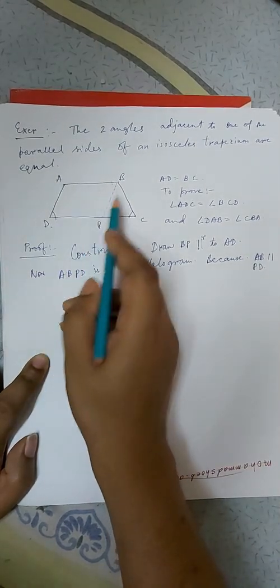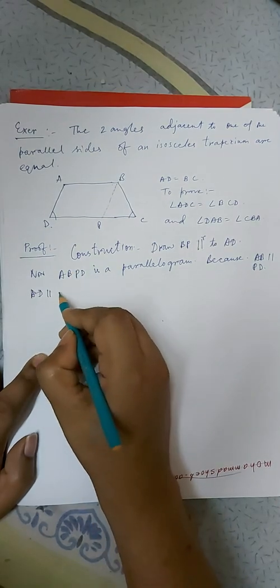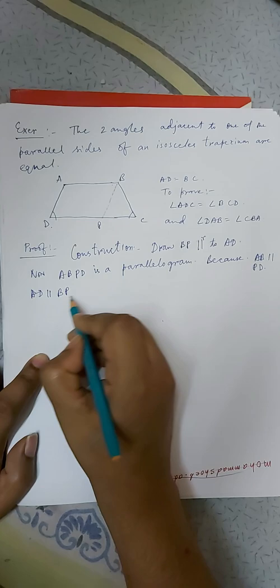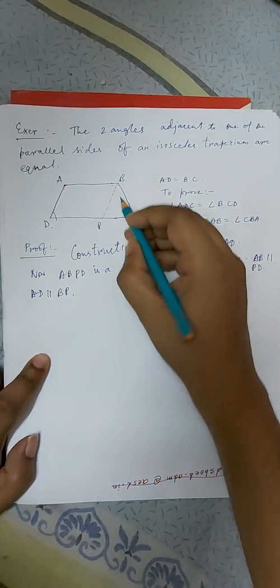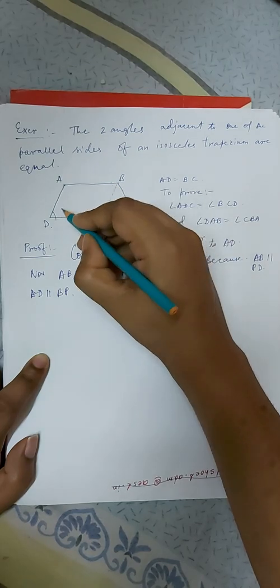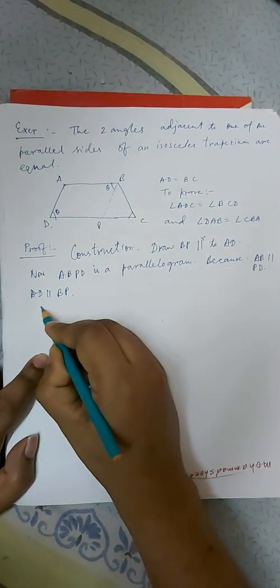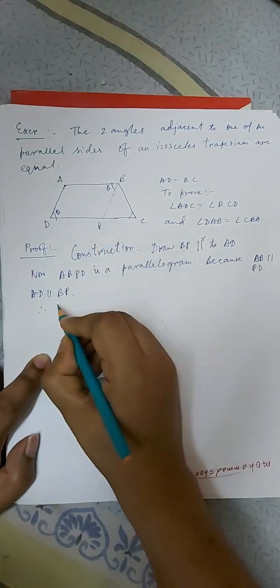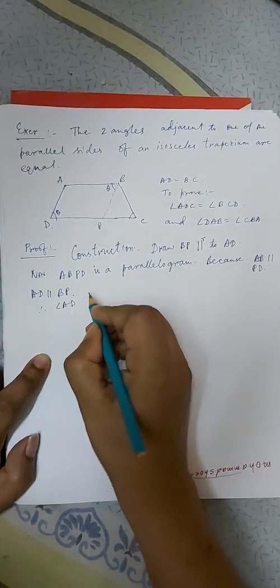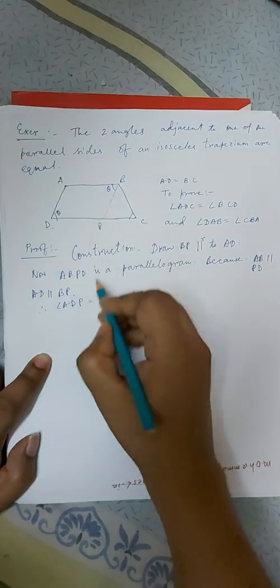AB is parallel to PD and AD is parallel to BP. This is what we have drawn by construction. So if this angle is theta, then this will be theta. Angle ADP will be angle ABP.